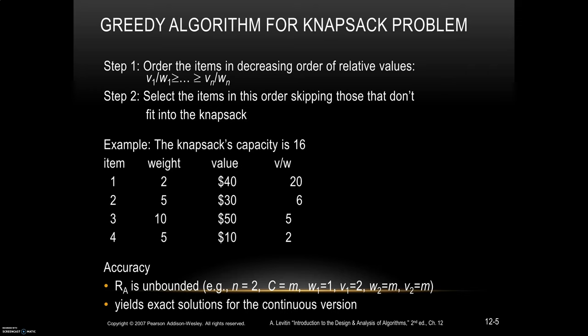Next, we will see the approximate algorithm for the knapsack problem. The problem statement: given n items with weights w1, w2, ..., wn and corresponding values v1, v2, ..., vn, and a sack of capacity W, find the most valuable subset of items that fits into the sack. The approach is to arrange items by value-to-weight ratio in descending order, then select items that fit and skip items that do not fit.